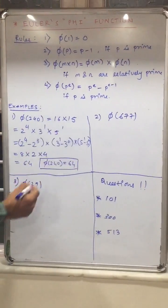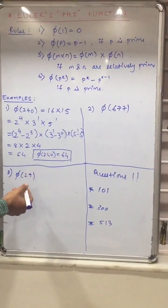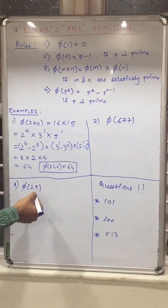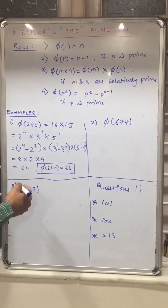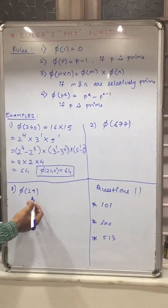Now let's solve one more example, phi of 29. As you can see, it is a prime number. As I taught you earlier, how to find if the given number is prime. So this is a prime number.